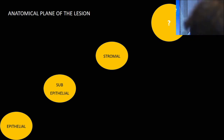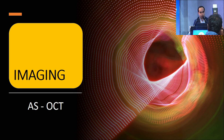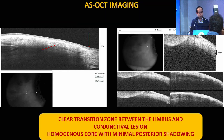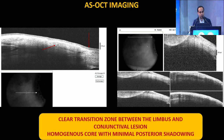What can help us further is imaging — an anterior segment OCT. It shows a clear transition zone between the limbus and the lesion, and a homogeneous course with minimal back-shadowing. What would be the master plan, given that the definitive diagnosis is always histopathological?